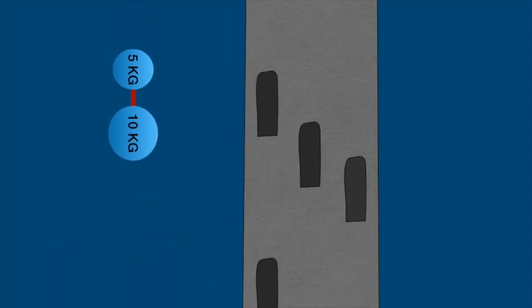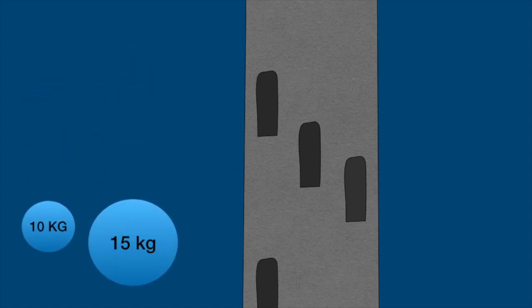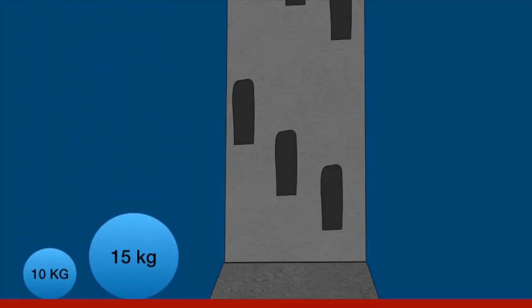However, since the system is tied, its total weight is 5 kg plus 10 kg equals 15 kg. As 15 kg is more massive than 10 kg, this system will fall faster than the 10 kg alone.